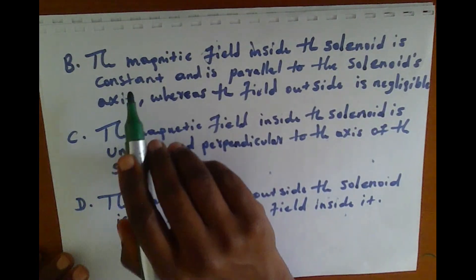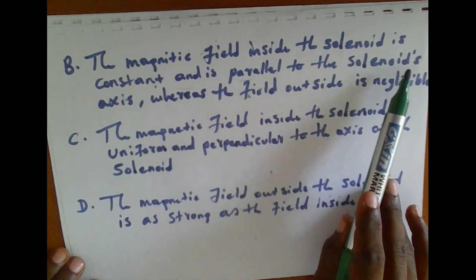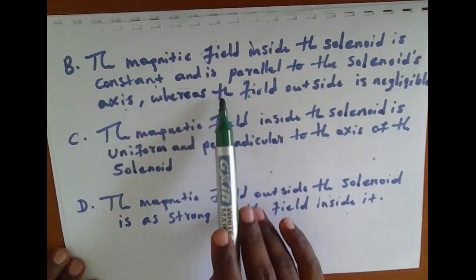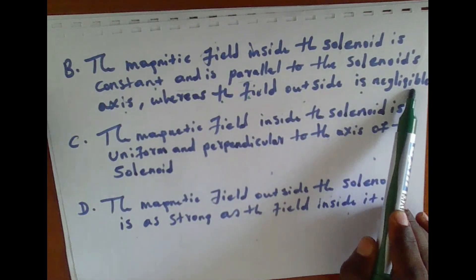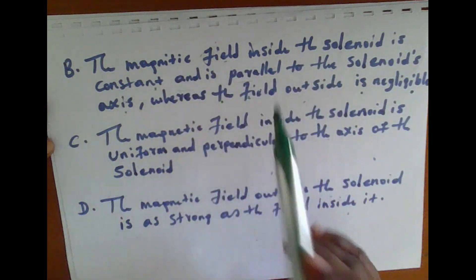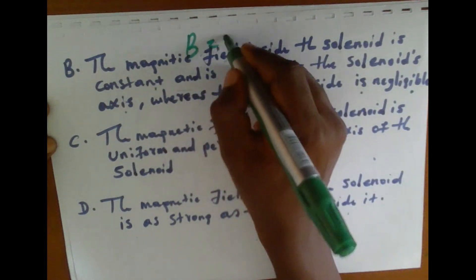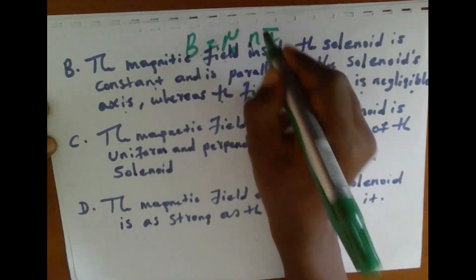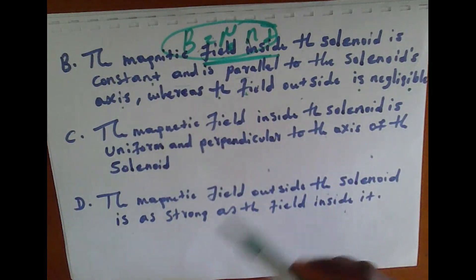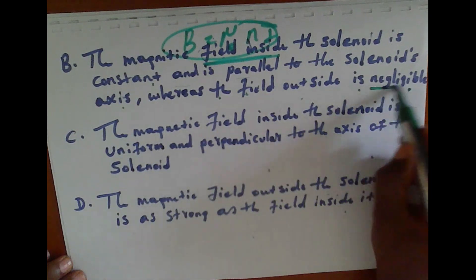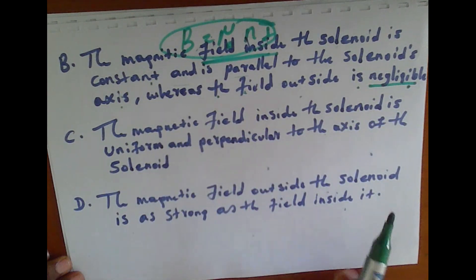Option B states the magnetic field inside the solenoid is constant and is proportional to the solenoid axis, whereas the field outside is negligible. The magnetic field inside the solenoid is constant, represented by B = μ₀nI, and outside the field is very small — negligible.